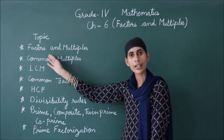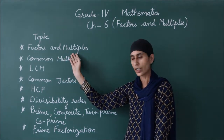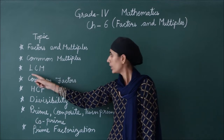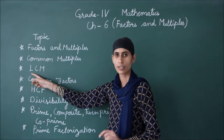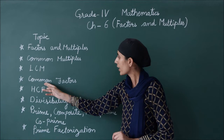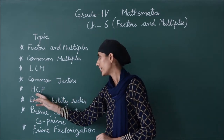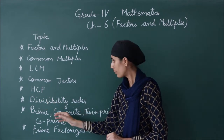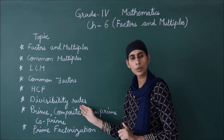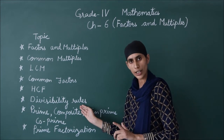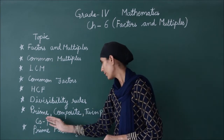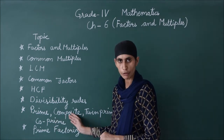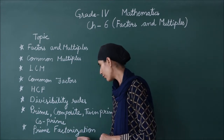We will learn what are factors and what are multiples. Next, how do you find out common multiples? LCM means Least or Lowest Common Multiple. Next is Common Factors, then HCF — Highest Common Factor. We will read divisibility rules: 2, 3, 5, and 10. Next, Prime Numbers, Composite Numbers, Twin Prime Numbers, and Co-Prime Numbers. And the last topic is Prime Factorization.